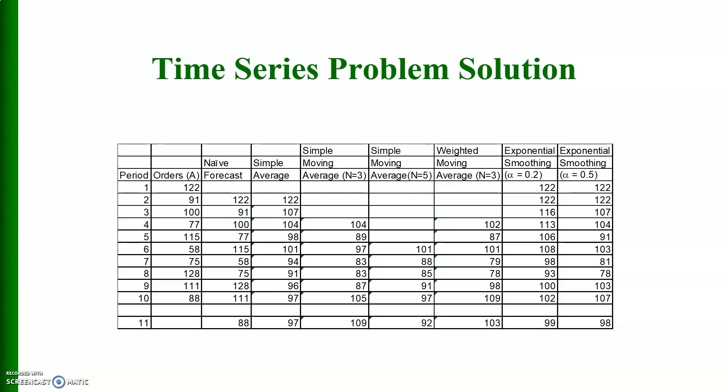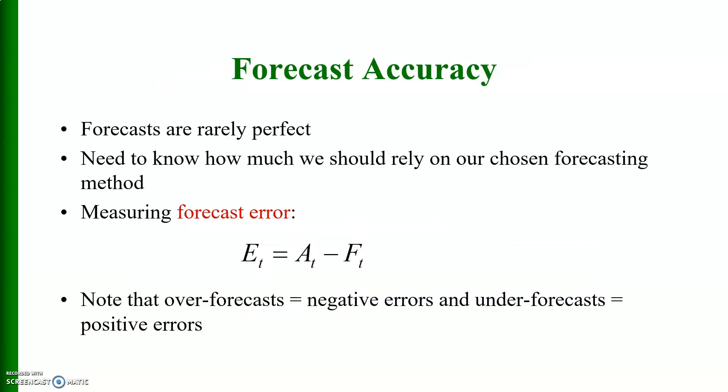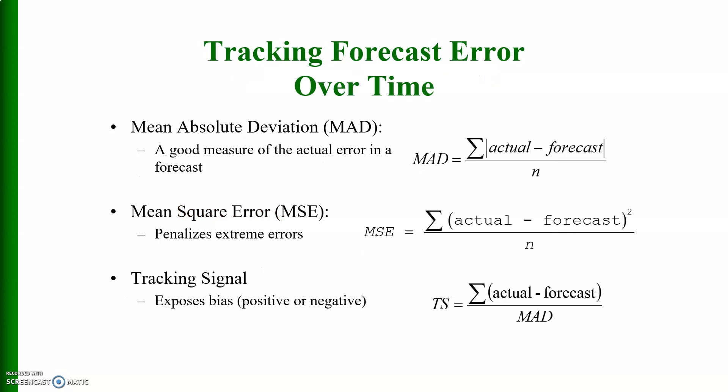Forecast accuracy: forecasts are rarely perfect. We need to know how much we should rely on our chosen forecasting method. Measuring forecasting errors is the difference between the actual and the forecast. Note that over-forecast equals negative errors and under-forecast equals positive errors.